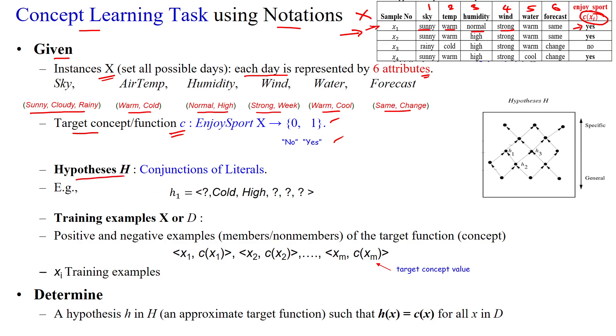Then there is the hypothesis denoted with capital H which is having the conjunction of literals, conjunction of constraints of the given training sample. So hypothesis space capital H is having n number of hypotheses we are going to derive by using this set of training data.